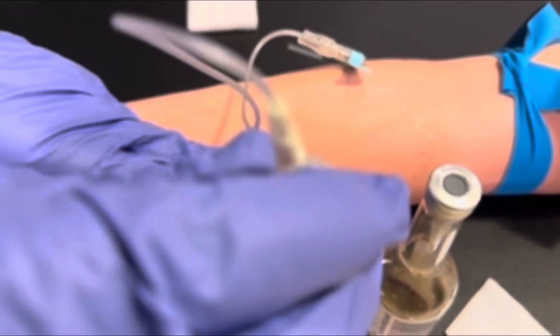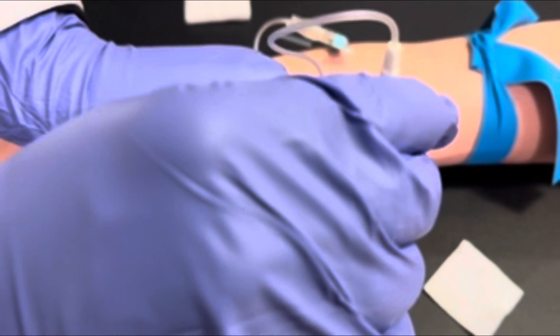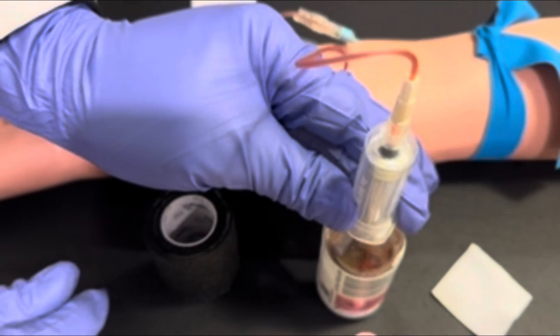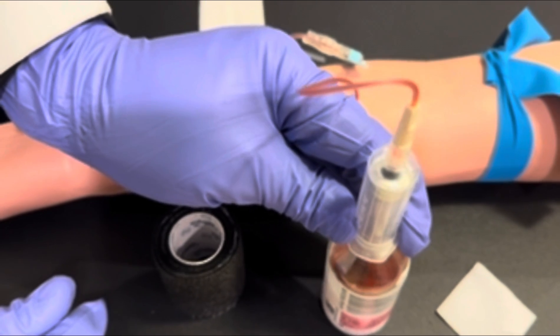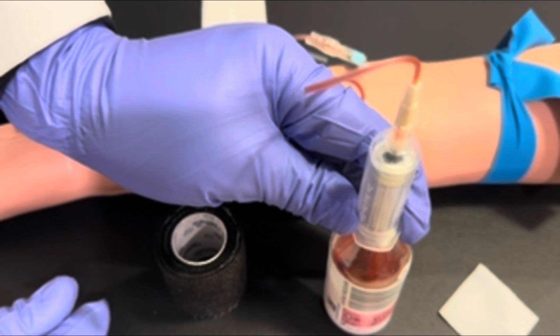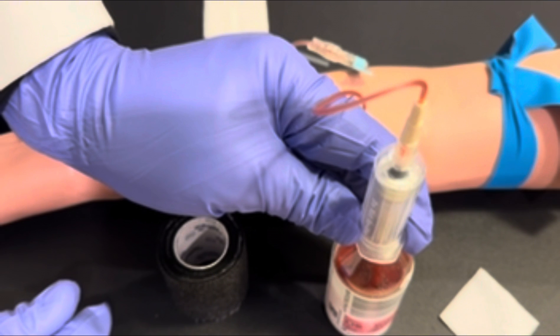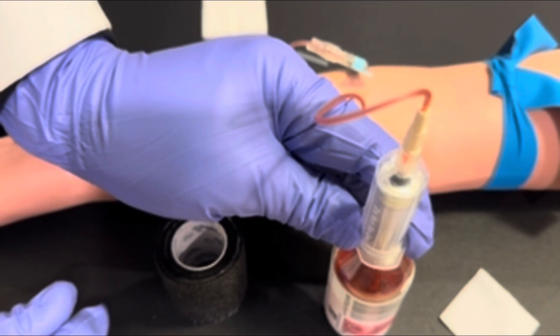Watch for the backflash. And then attach the vacutainer holder to the neck of the blood culture bottle and allow the blood to flow into the blood culture bottle.